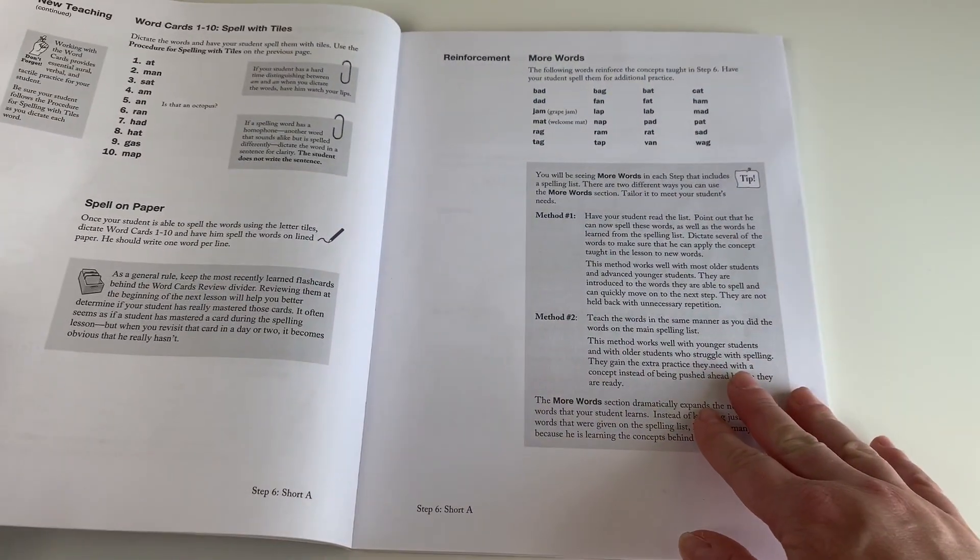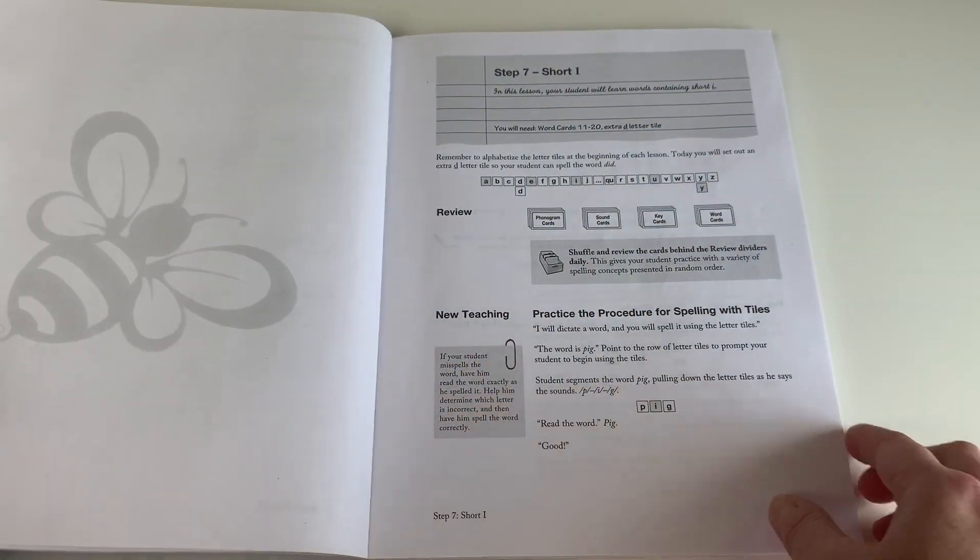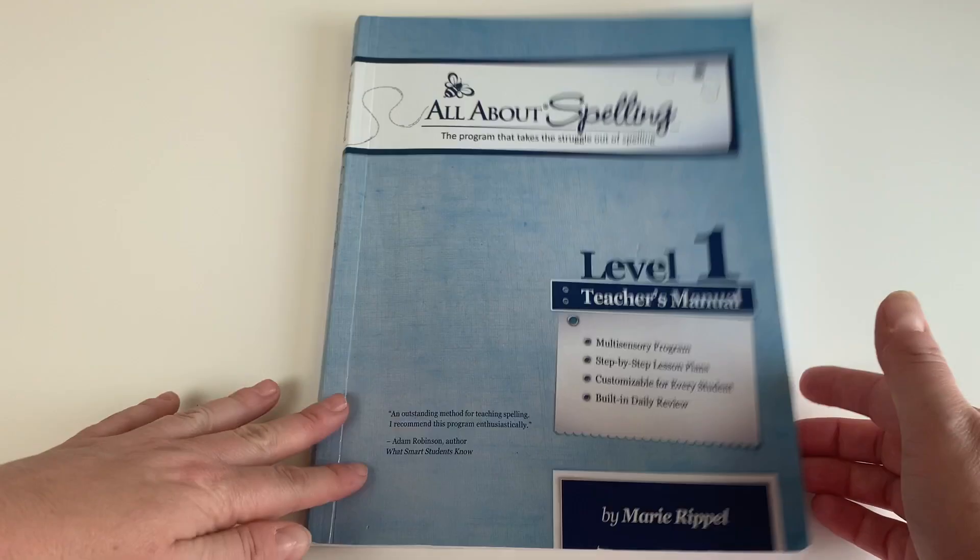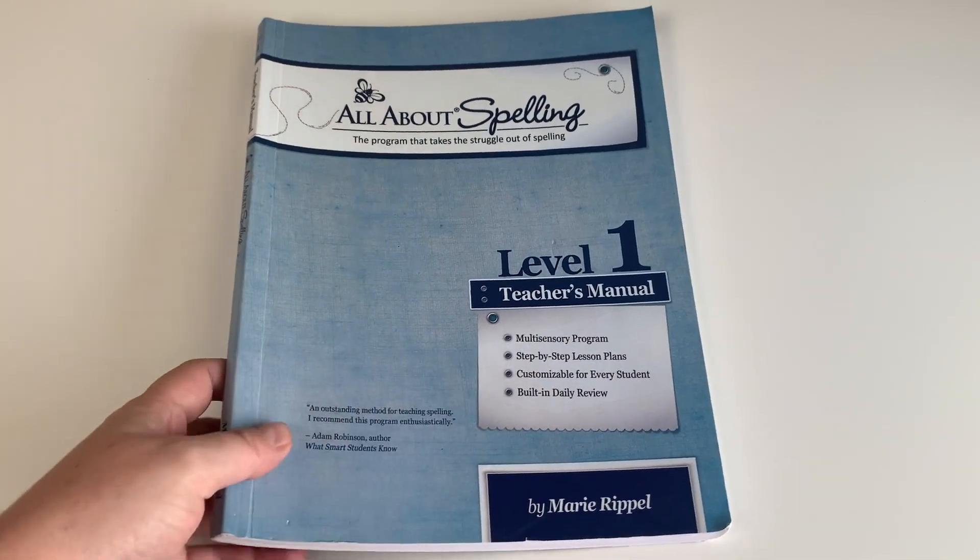Level one is super basic, but we wanted to make sure we didn't miss any of the spelling concepts and spelling rules that they teach. So we're just moving through it quickly and we will start the next book as soon as we're finished with this one.